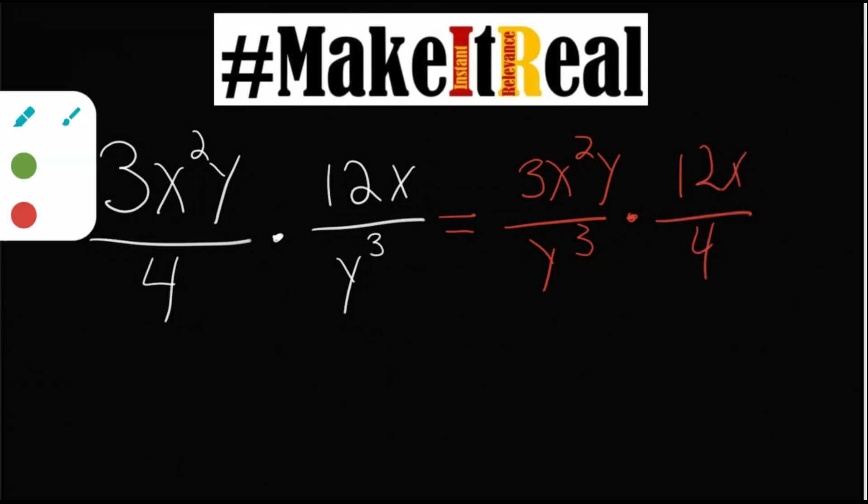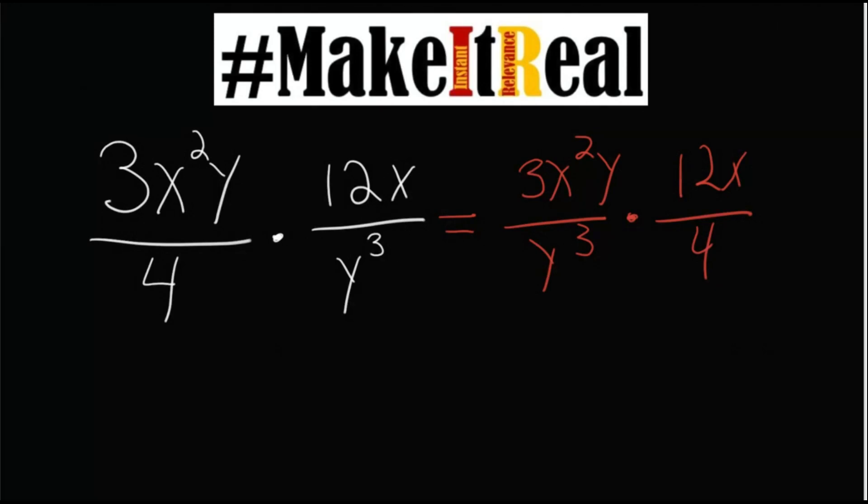From there they've visually created a situation where simplifying makes sense. This is now y to the first over y to the third which depending on how you teach it I would expect them to recognize as a subtraction problem in the exponents. So 3x squared over y squared times and then the only thing we can correct in the second fraction is 12 divided by 4 which is 3 and then x over 1.